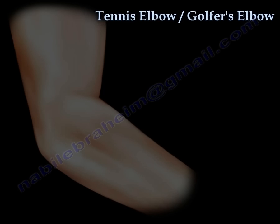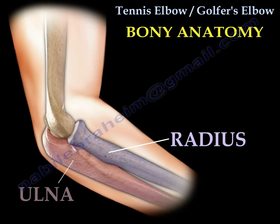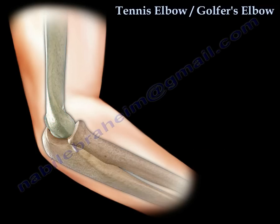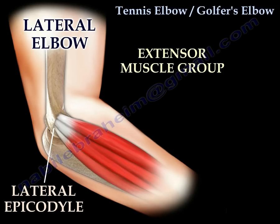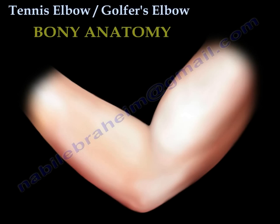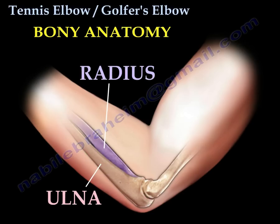Tennis and golfer's elbow: bony anatomy of the elbow. Here you can see the radius, the ulna, and the humerus. Here you can see the lateral side of the elbow — the lateral epicondyle gives origin to the extensor muscle group, specifically the extensor carpi radialis brevis. In this picture you see the bony anatomy: the ulna, the radius, and the humerus.